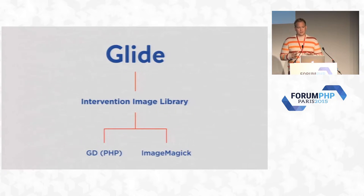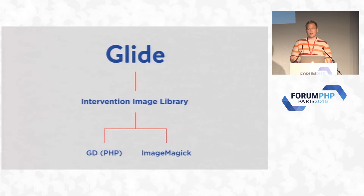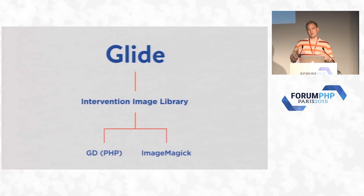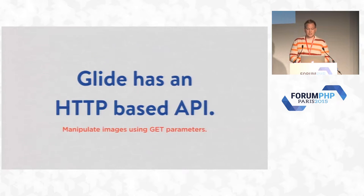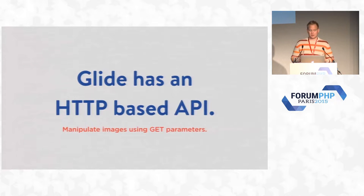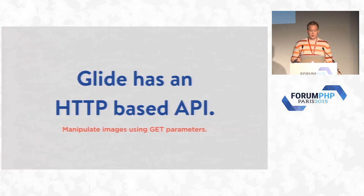Glide basically works like this: it's not an alternative to GD or ImageMagick, and it's also not an alternative to the Intervention library or Imagine. The way it works is Glide sits on top of Intervention, and Intervention is an abstraction between GD and ImageMagick. So you can actually use GD or ImageMagick with Glide. Glide has an HTTP-based API — you configure it in PHP, but you access it using HTTP by passing image manipulation arguments as GET variables. You end up with very little image manipulation code written in PHP itself.